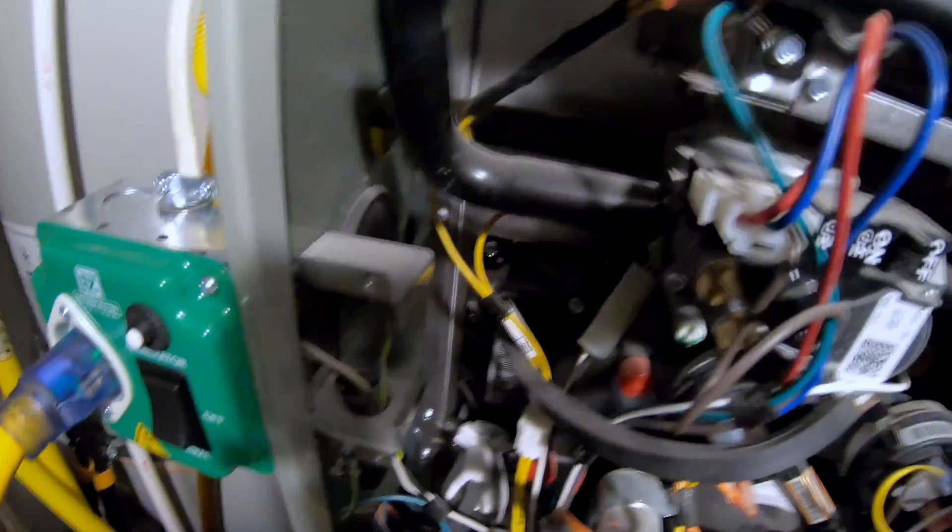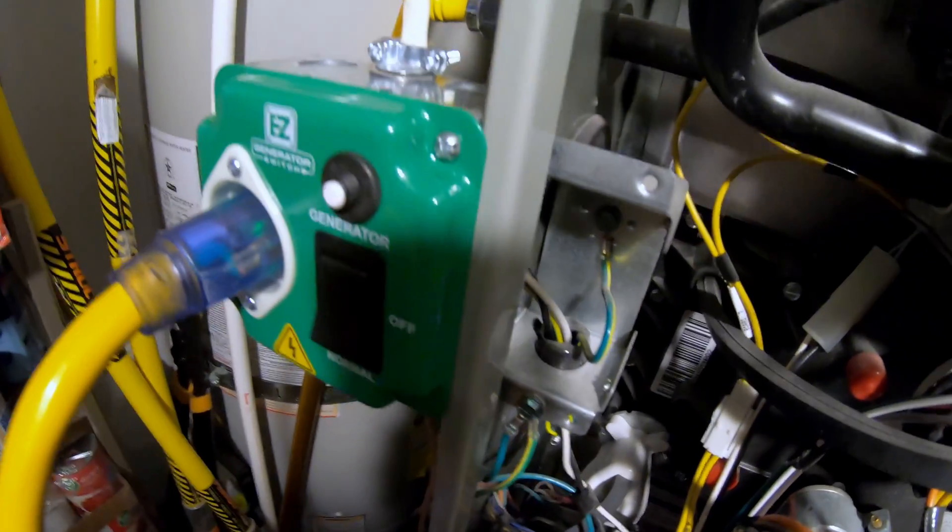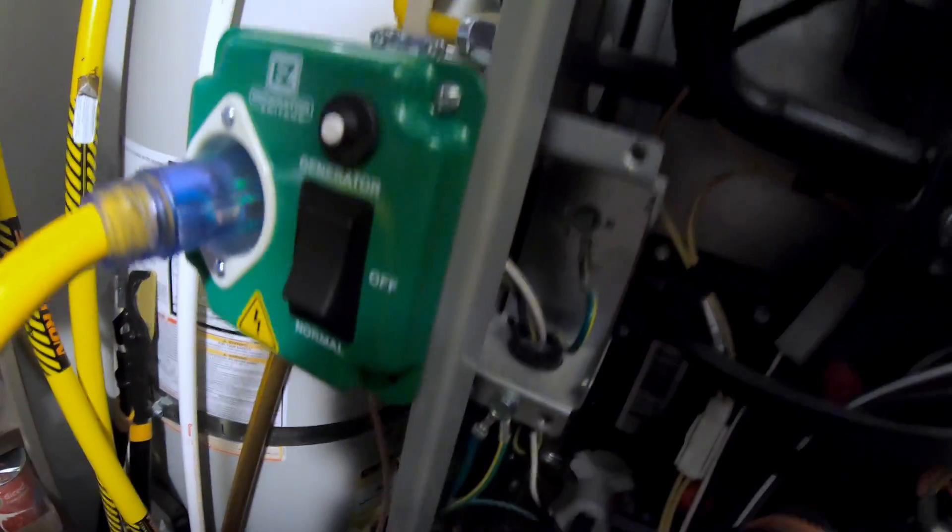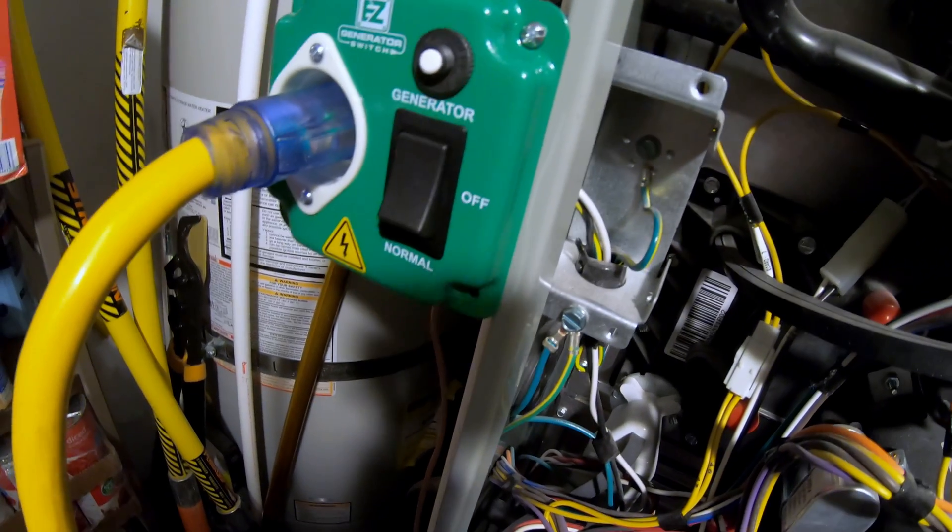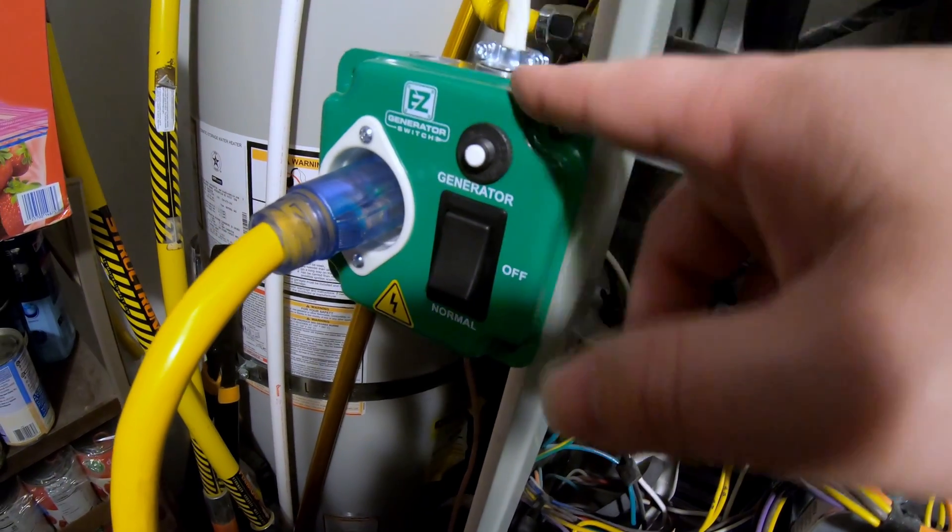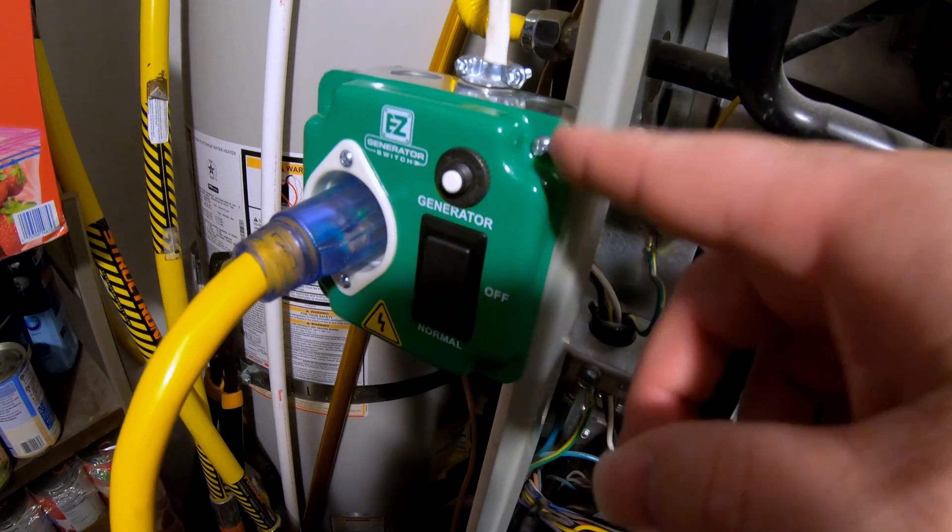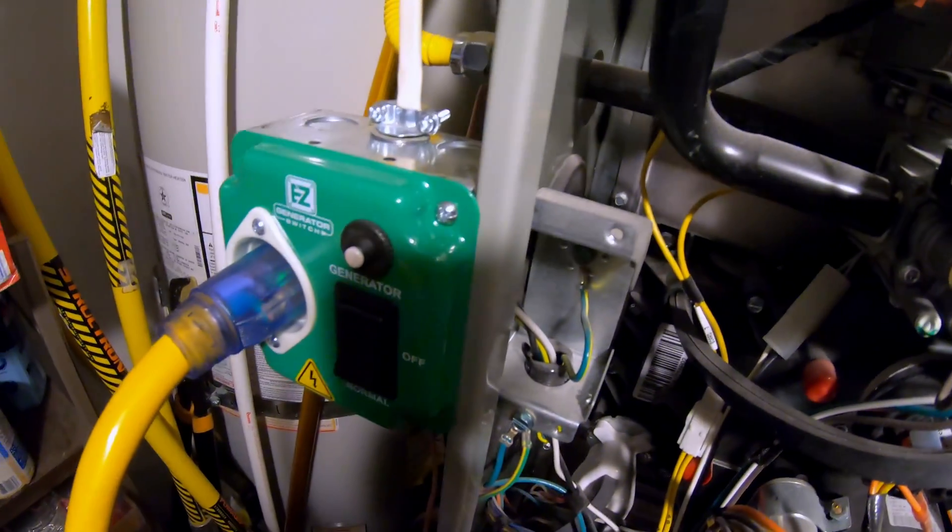That allows you to safely run your furnace when the power goes out. And then when the power comes back on, you just flip the switch down to normal and you're good to go. It also acts as a service disconnect there with an off position. So if you live in a cold area, you definitely want to get one of these because it's worth its weight in gold to be able to run your furnace when the power goes off.